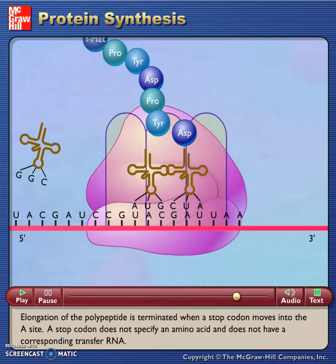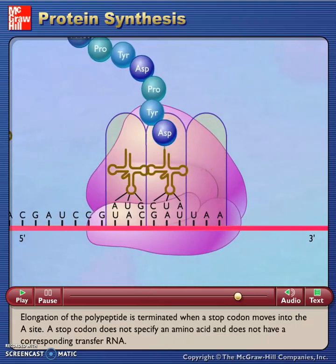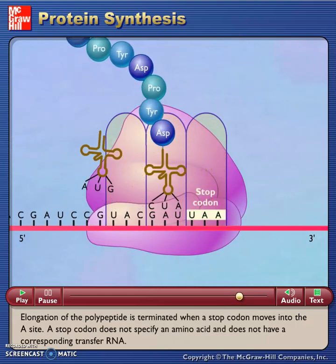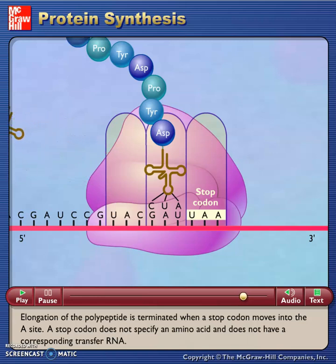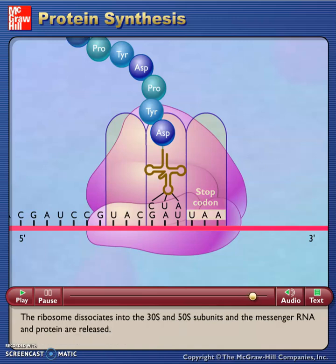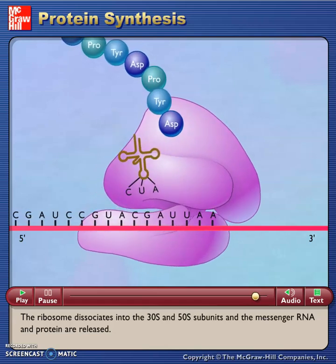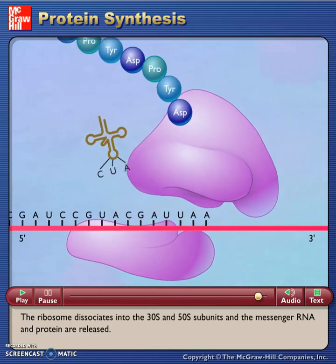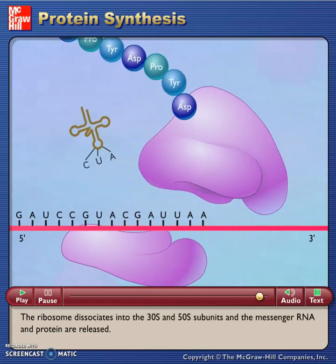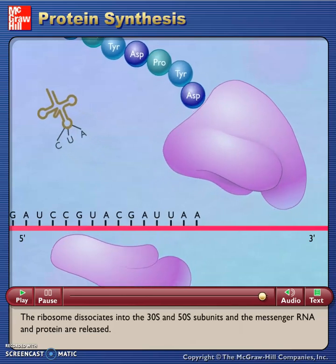Elongation of the polypeptide is terminated when a stop codon moves into the A-site. A stop codon does not specify an amino acid and does not have a corresponding transfer RNA. The ribosome dissociates into the 30S and 50S subunits and the messenger RNA and protein are released.